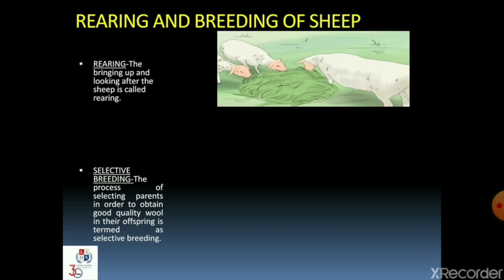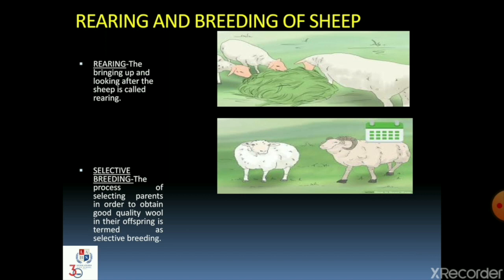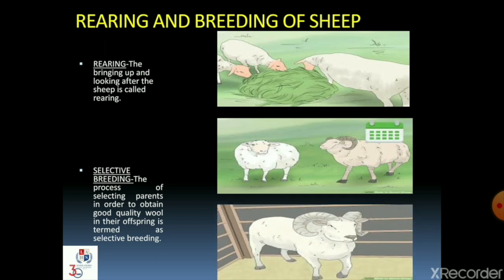Now let's know about selective breeding. The process of selecting parents in order to obtain good quality wool in their offspring is termed as selective breeding. In picture 2, we can see there are two varieties of sheep — one having a fluffy coat and the other having a horn, showing it is strong and sturdy. In selective breeding, these two varieties are crossed together to get an offspring that has the qualities of both. These breeds of sheep have a thick coat of hair on their body and are called sheep of good breed.